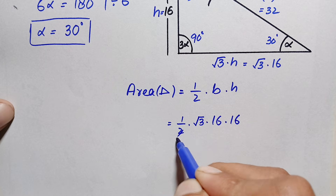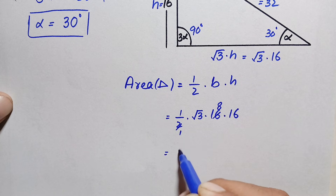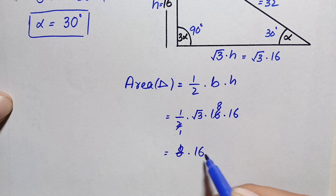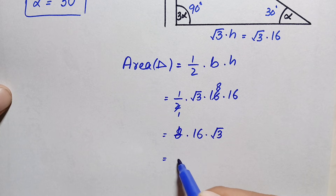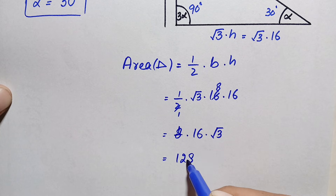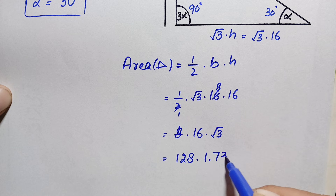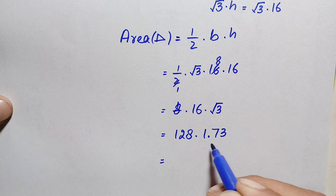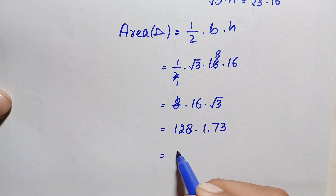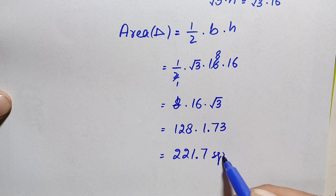Simplifying: ½ × 16 = 8, so the expression becomes 8 × 16 × √3. Calculating 8 × 16 = 128, and √3 ≈ 1.73. Therefore, 128 × 1.73 ≈ 221.7 square units.